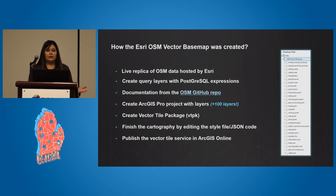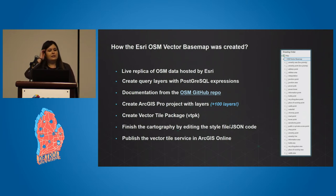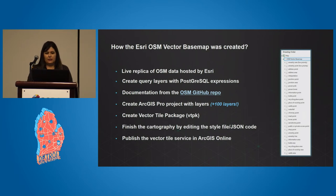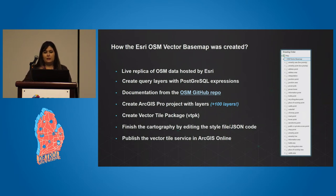So how we created the OSM vector base map: we started with a live replica of the OSM data hosted at ESRI. From there, we started creating query layers using Postgres expressions, and then we started creating the layers in our ArcGIS Pro project. All that information and documentation to put everything together came from the OSM GitHub repository. We ended up having more than 100 layers to make it work with our ESRI software, and we spent months just improving the cartography, symbology, and labeling settings in the Pro project.